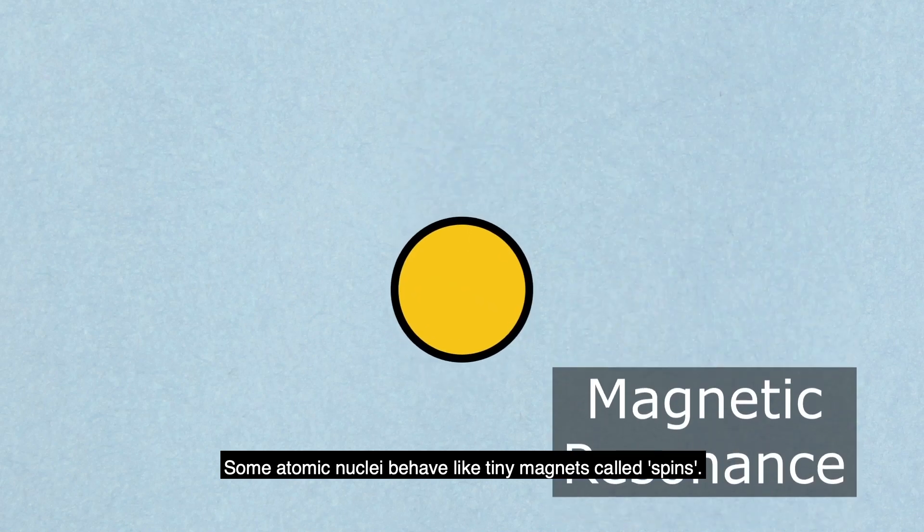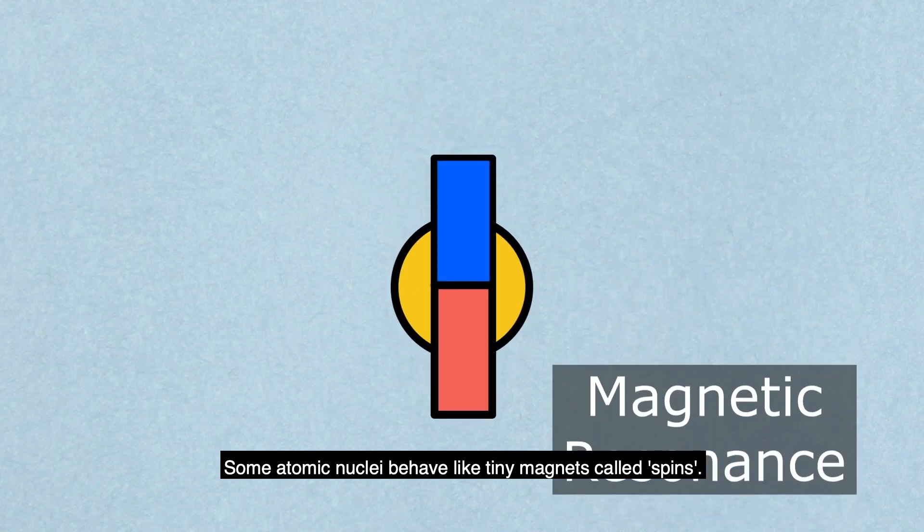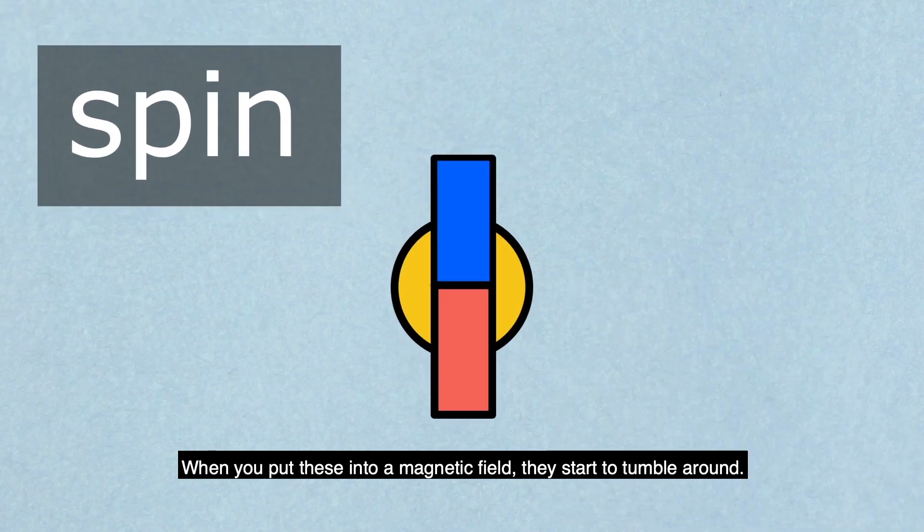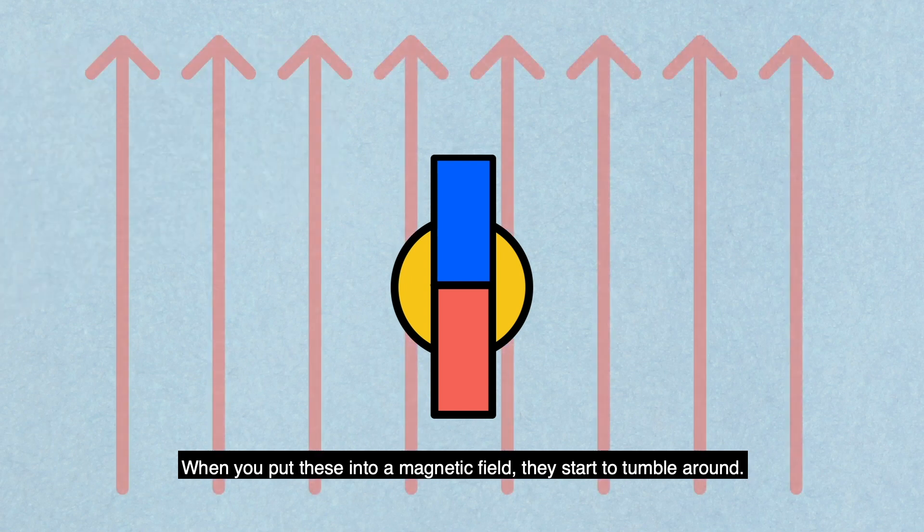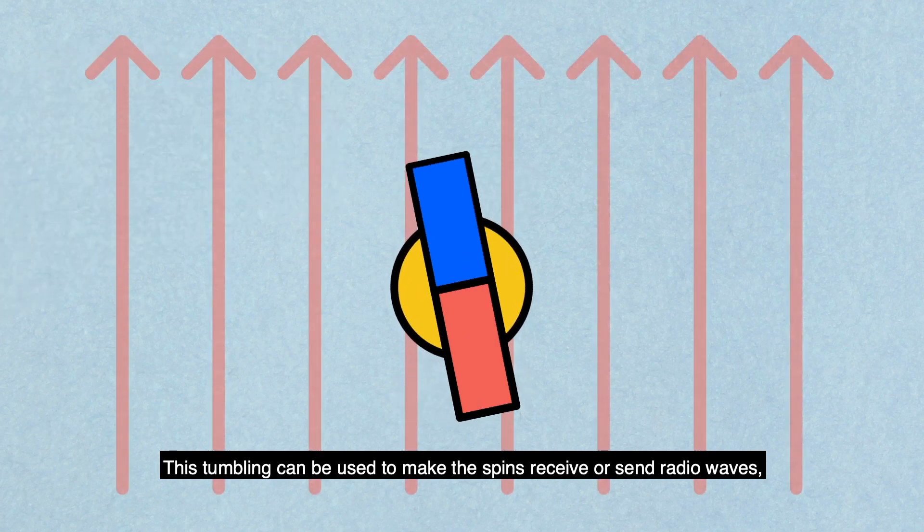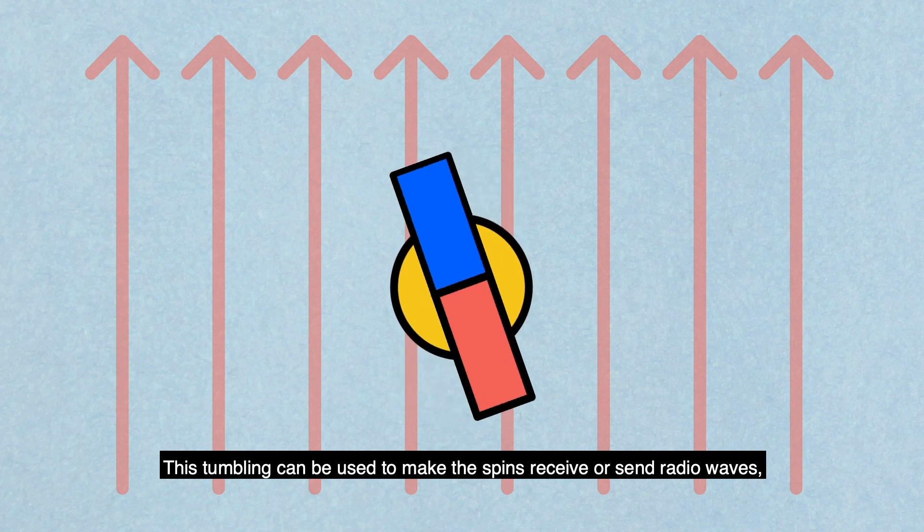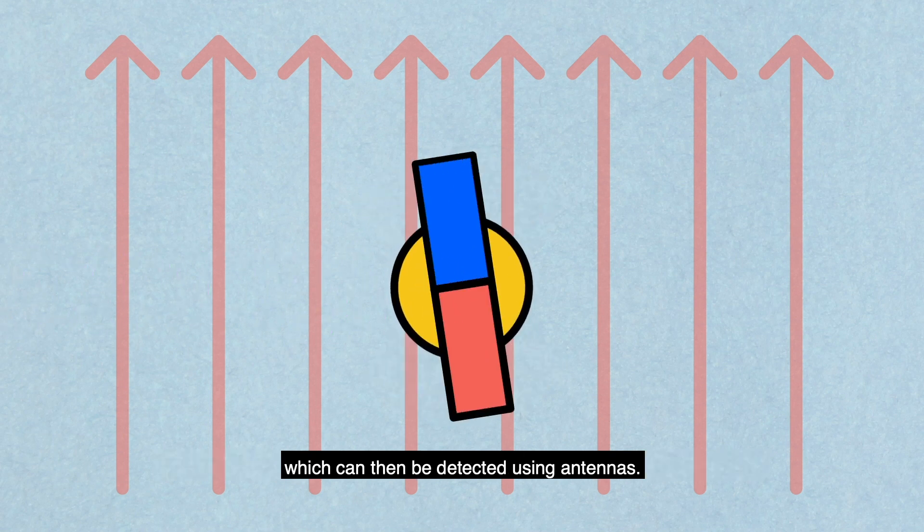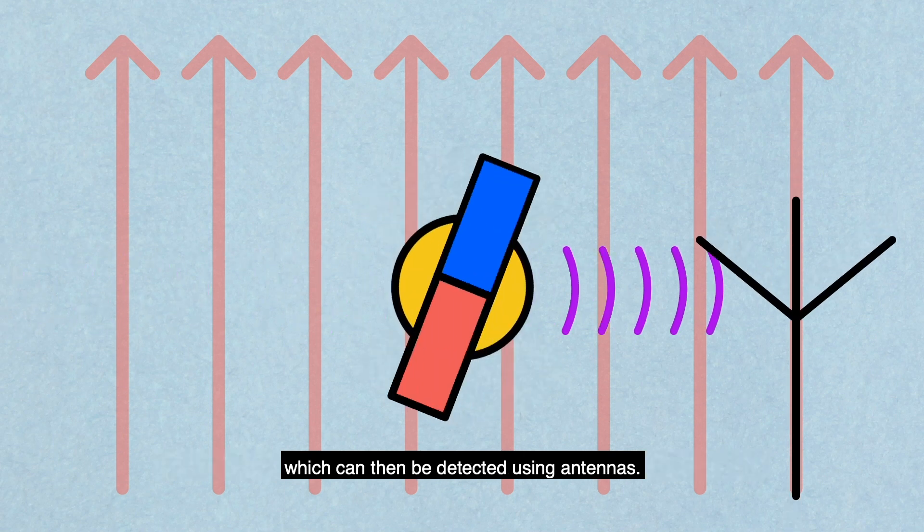Some atomic nuclei behave like tiny magnets called spins. When you put this in a magnetic field, they start to tumble around. The tumbling can be used to make the spins receive or send radio waves, which can then be detected using antennas.